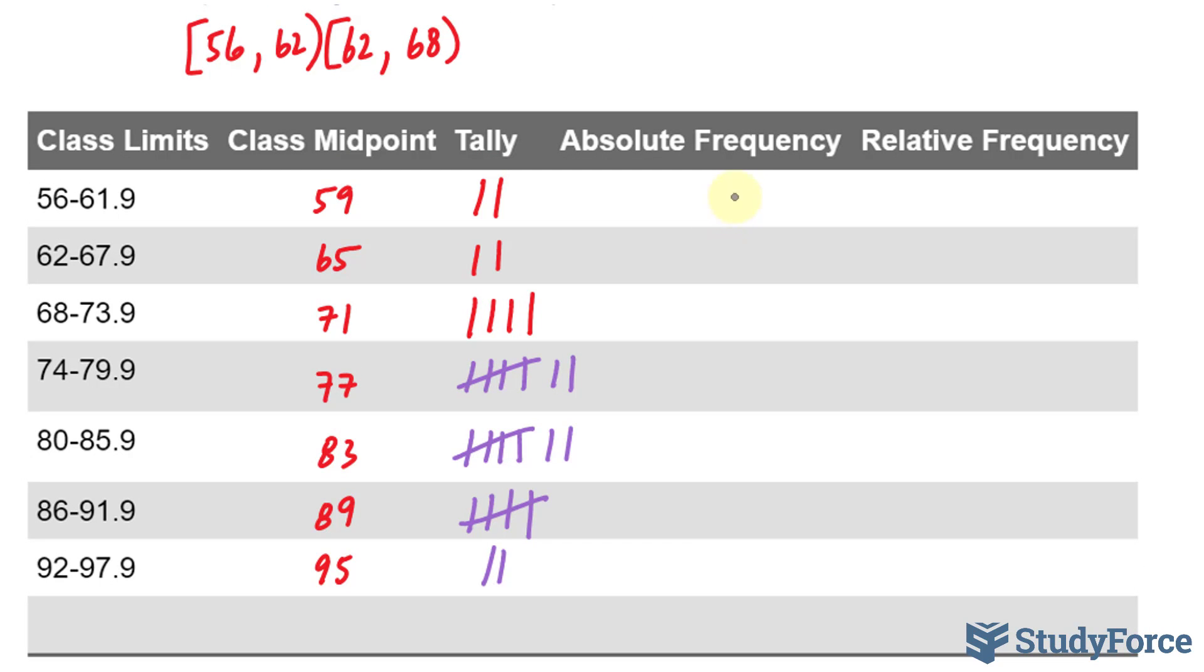Now that I've filled it in, I can also fill in the absolute frequency. So this represents two, two, four, and the rest look like this.